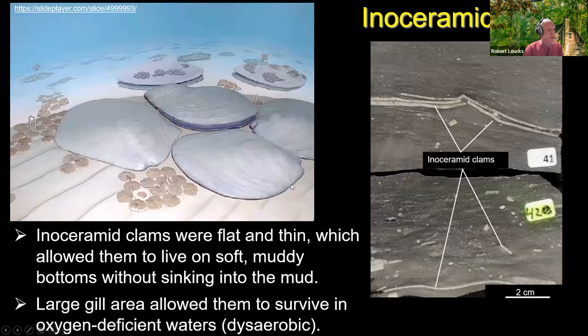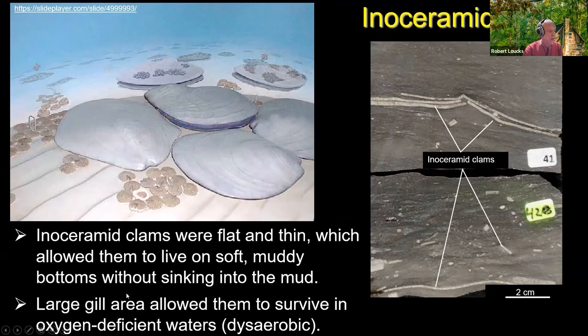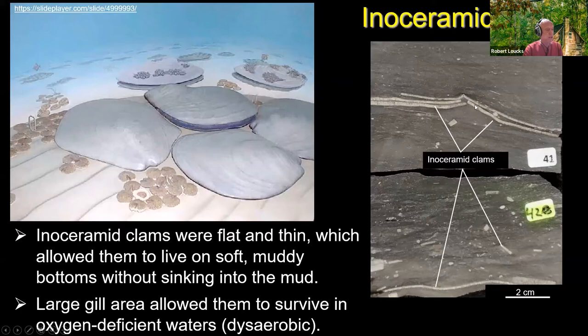The largest animal you see in the Austin chalk are these big inoceramid clams. You've probably seen these on field trips — they can be from a few inches to several feet across. They were very flat and thin, so they could live on muddy bottoms without sinking into the mud. They also had large gill areas that allowed them to survive in oxygen-deficient, dysaerobic waters — low oxygen, but enough that animals could live in it. Here's one from an Austin chalk core at two centimeter scale — both shells present, with some distortion or breakage; they probably slipped over each other. The shell wall is very prismatic so they break down quite easily.